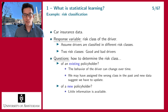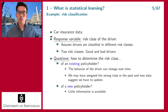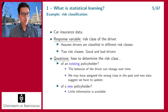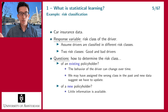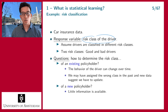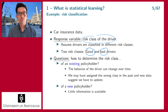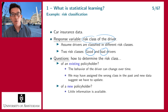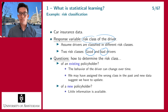Let's go further on the car insurance example. Assume you have a car insurance data set — information on policyholders over the last five years. You can observe different features: where they live, how much they drive, what car they drive. You can observe how many accidents each policyholder has each year. The response variable here is the risk class — classifying drivers as good or bad. Good drivers pay premiums but have few claims; that's what you want as an insurer.